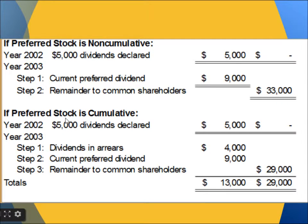In case of cumulative, in 2002, $5,000 was given as dividend and the entire amount went to preferred stockholders. In 2003, the dividend was $42,000. In case of cumulative, we first have to give the arrears of the dividend from the past year. Arrears are $9,000 minus $5,000, which is $4,000. So first $4,000 from the past year is given to preferred stockholders, and then the current year dividend is again 9%, which is $9,000. So $9,000 plus $4,000 equals $13,000 given to preferred stockholders in case of cumulative in 2003.